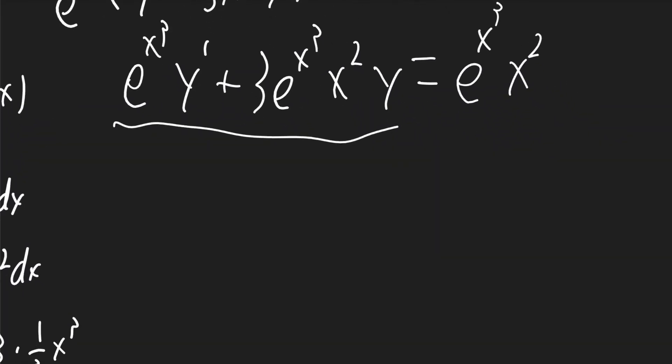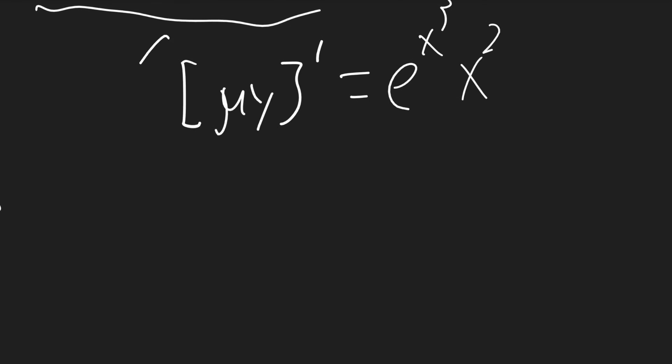Now this part here is just the product rule of mu times y and its derivative. And that'll be equal to e to the x cubed times x squared. Now I can integrate both sides.